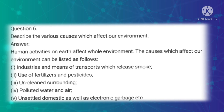Sixth long-answer question: Describe the various causes which affect our environment. Answer: Human activities on earth affect the whole environment. The causes can be listed as follows: first, industries and means of transport which release smoke; second, use of fertilizers and pesticides; third, unclean surroundings; fourth, polluted water and air; fifth, unsettled domestic as well as economic garbage.